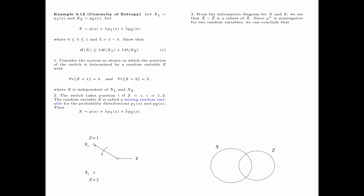From the information diagram for the two random variables x and z, we see that x̃ minus z̃ is a subset of x̃. Because mu star is non-negative for two random variables, we can conclude that mu star of x̃ is greater than or equal to mu star of (x̃ minus z̃), which is equivalent to H(x) ≥ H(x|z).